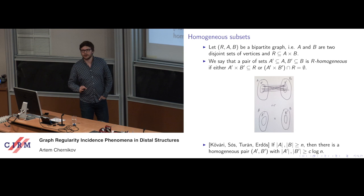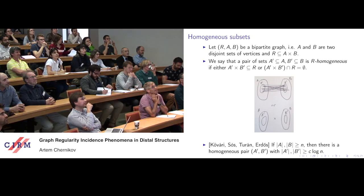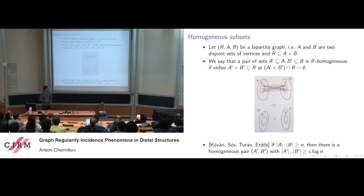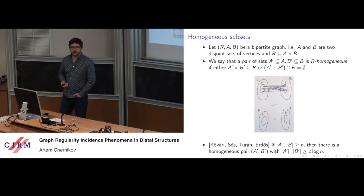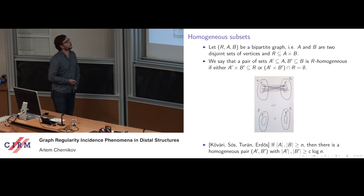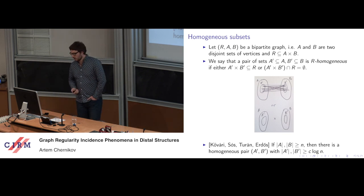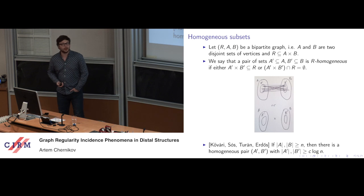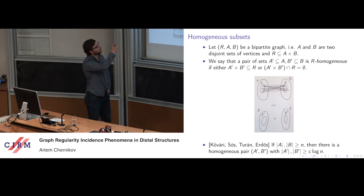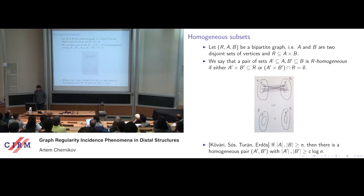Before I say anything about model theory, I would like you to consider a purely combinatorial situation. We are given a bipartite graph: two disjoint sets A and B, and an edge relation R, a subset of A times B. We say that a pair of subsets A' ⊆ A and B' ⊆ B is homogeneous if either all edges exist between A' and B', or no edges exist between them.